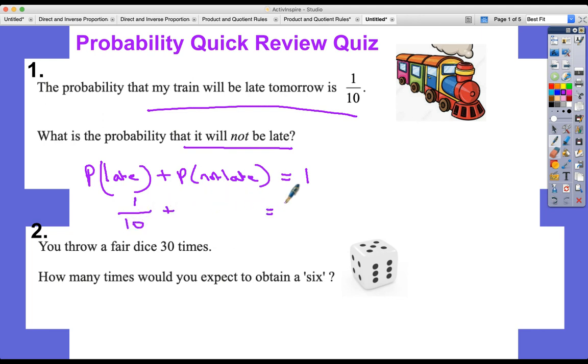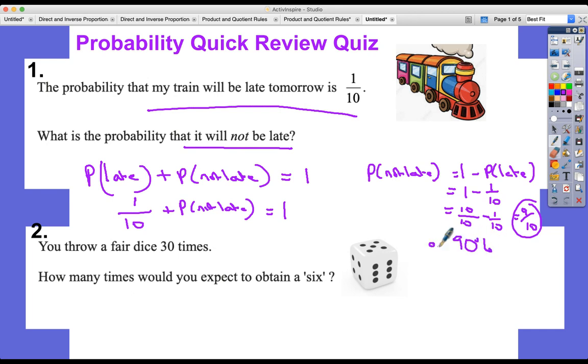What we could do is say the probability of not being late is 1 subtract the probability of being late, or 1 minus 1/10. 1 is 10/10 minus 1/10 which is 9 over 10.